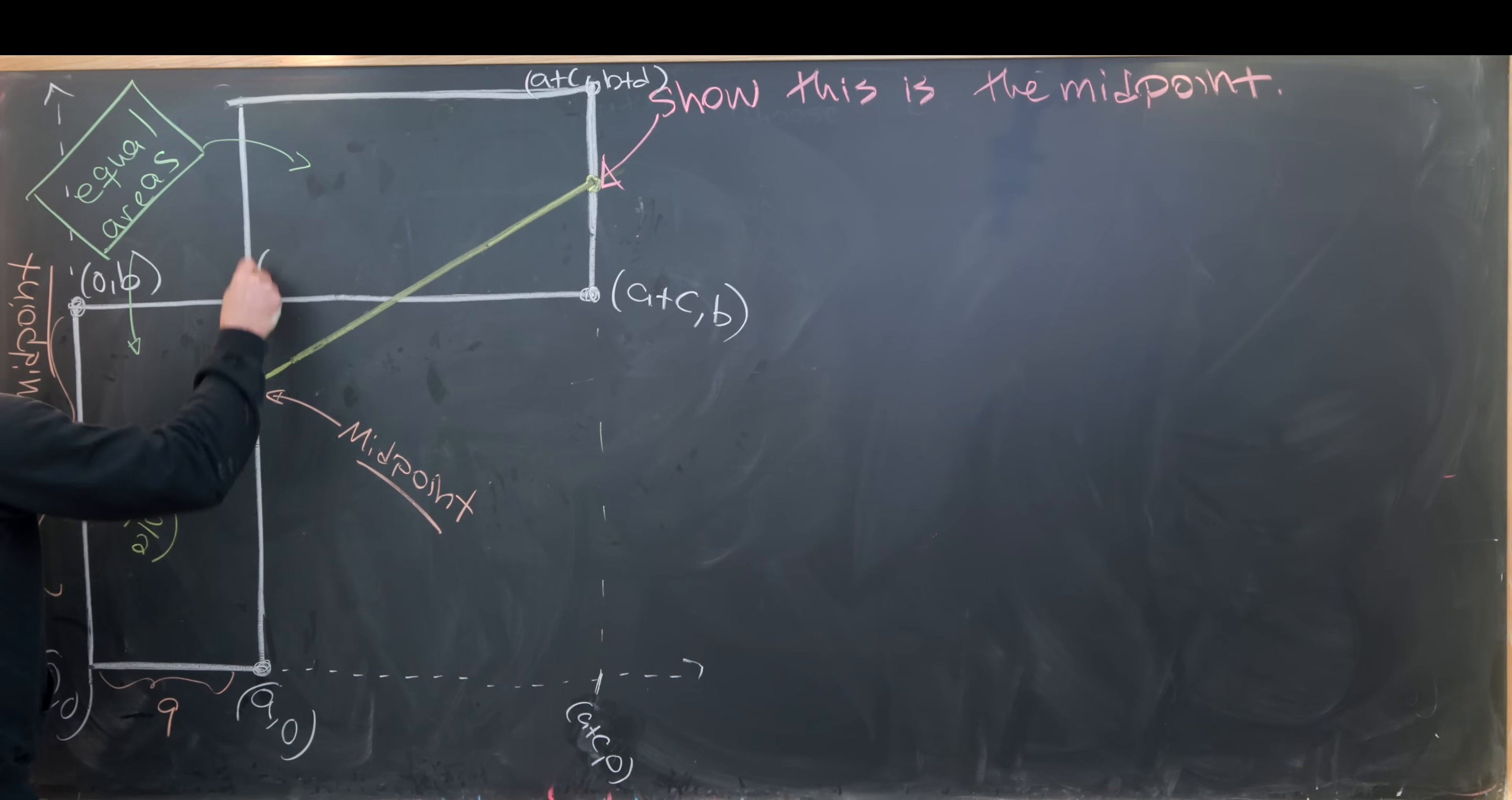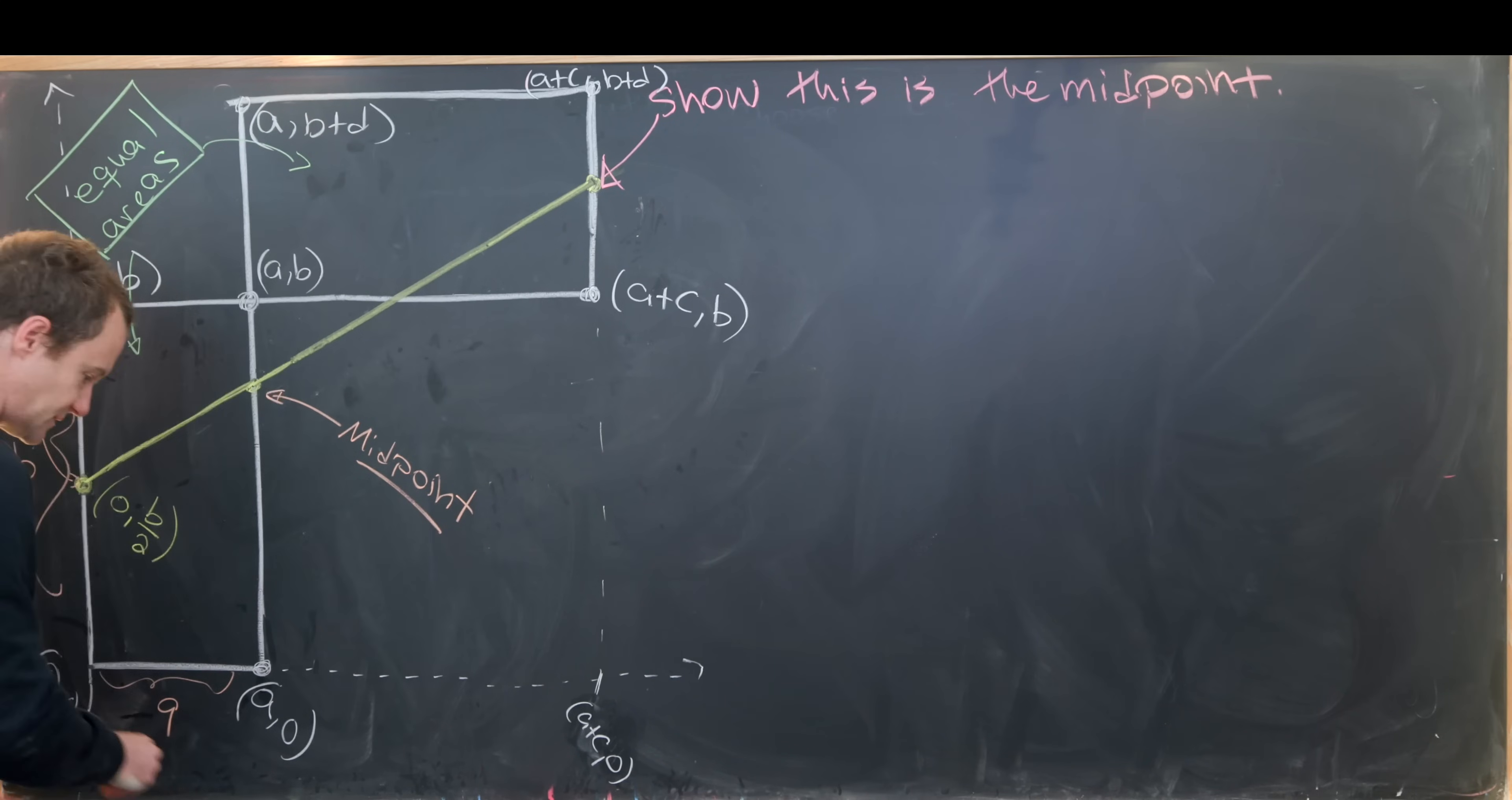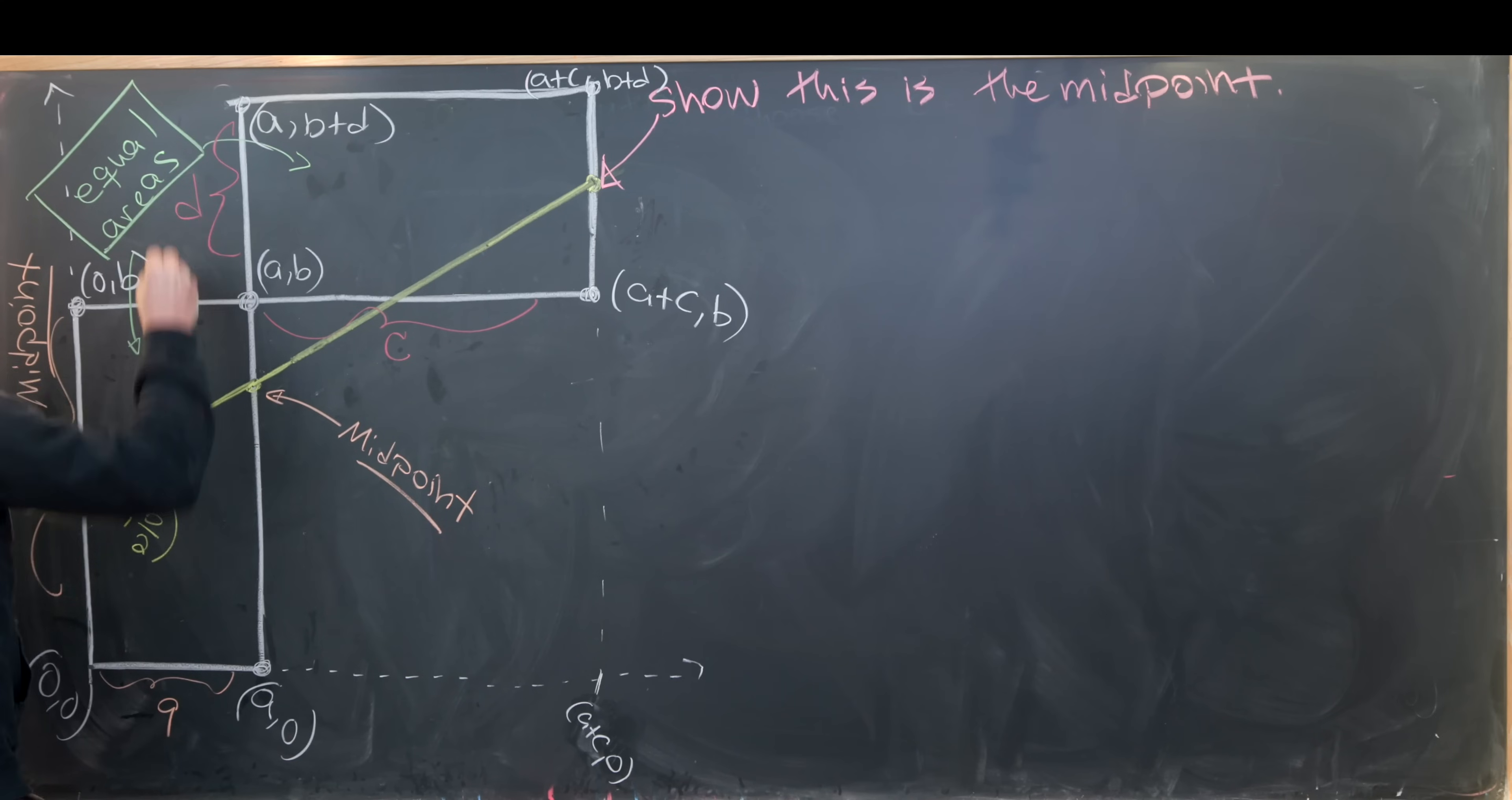So furthermore, just to fill in the details, this point right here is (a,b). This point right here will be (a, b+d). So again, this means that here we have side length c and side length d.